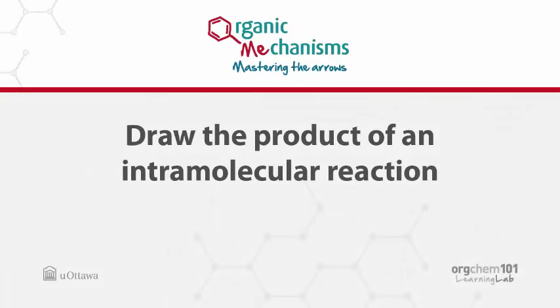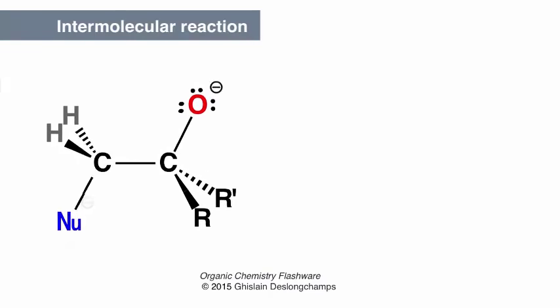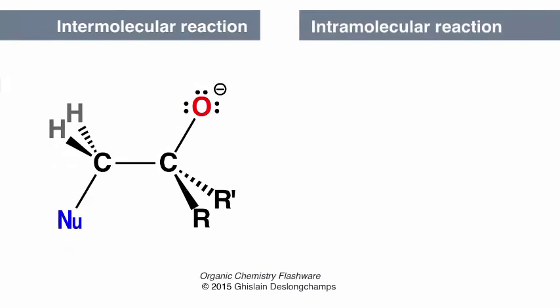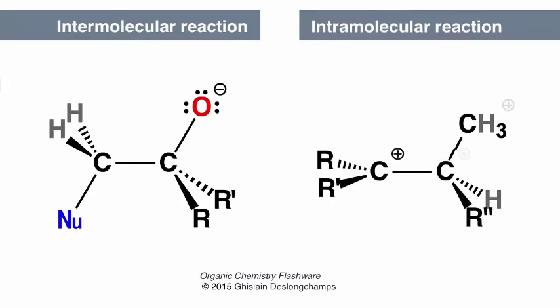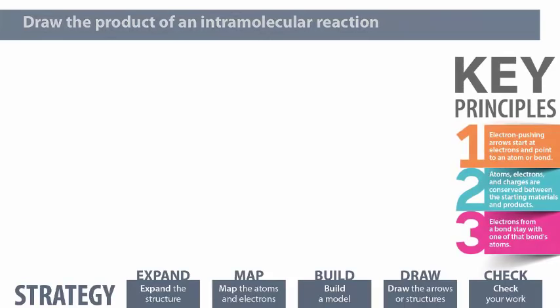Next, you'll learn to draw the product of an intramolecular reaction, given the starting material and electron-pushing arrows. Intermolecular reactions take place between molecules, while intramolecular reactions take place within a single molecule. The strategy for drawing the product of intramolecular reactions is the same as for any other. The key principles are the same, too.